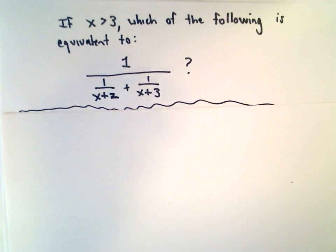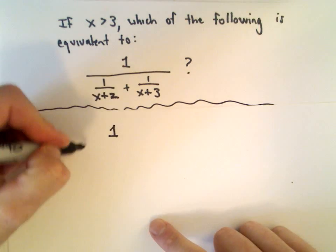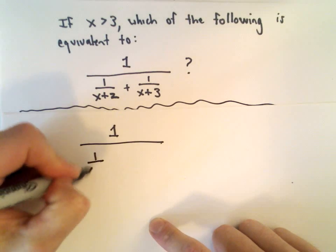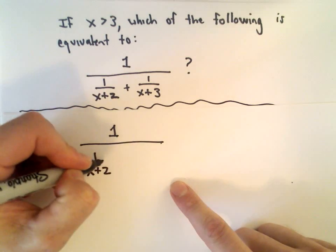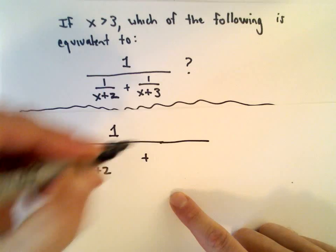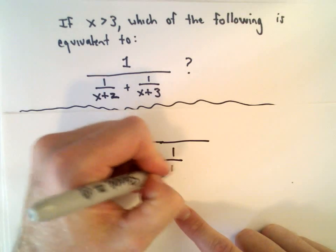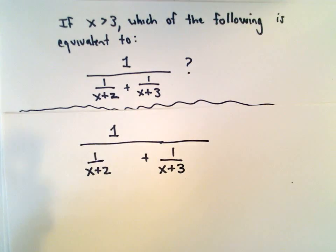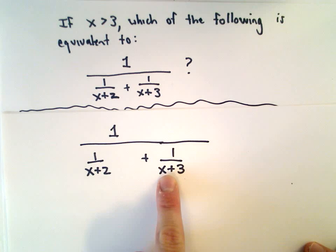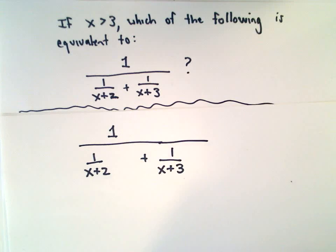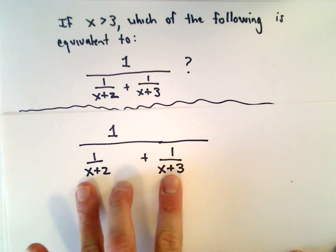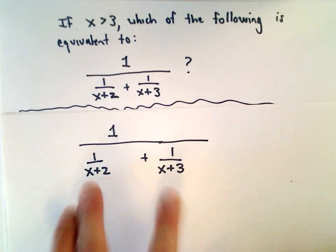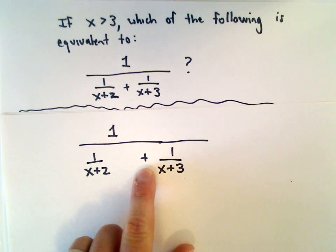So first, we've got 1 over (1 over x+2 plus 1 over x+3). What we're going to do is simplify this fraction. The way I'm going to start is by writing the denominator as a single fraction. To do that, since we're doing addition, we need to get common denominators.